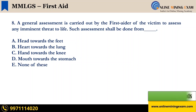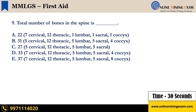Time up. The correct answer is A — head towards the feet. Next question: the total number of bones in the spine is — A — 22; B — 31; C — 27; D — 33; E — 37. Your time starts now.